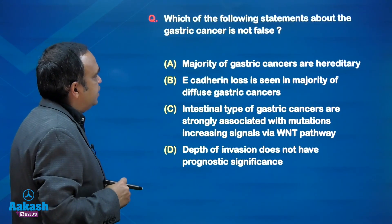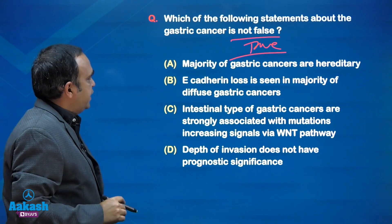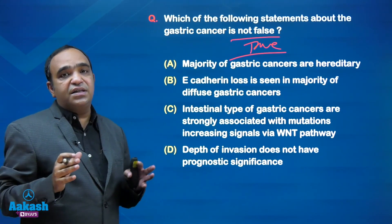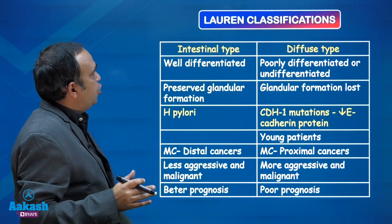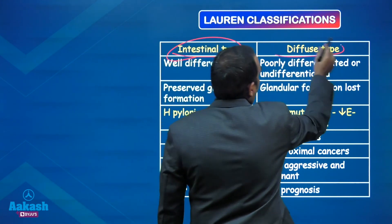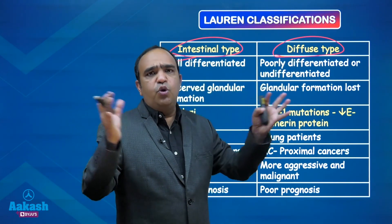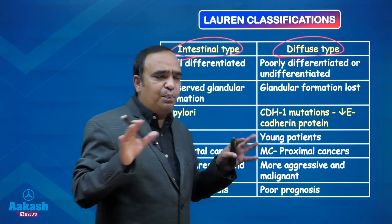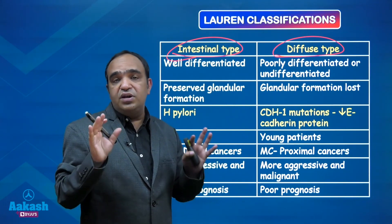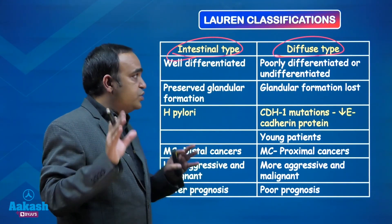Which of the following statements about gastric cancer is not false? Not false means we have to find the true statement. This question is based on the Lauren classification of gastric cancers, which divides them into two types: intestinal type and diffuse type. Diffuse is poorly differentiated - more scattered, not organized, so it is a bad tumor. Intestinal type has preserved glandular structures, so it is better differentiated, meaning better prognosis.